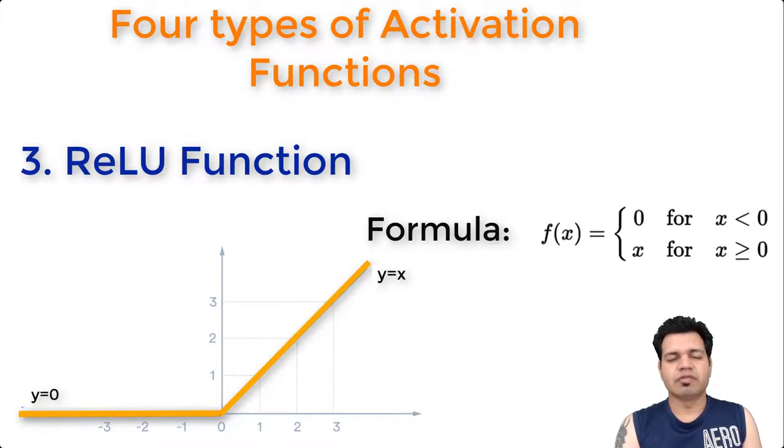A general problem with both the sigmoid and tanh functions is that they saturate, meaning that large values snap to 1, and small values snap to minus one or zero for tanh and sigmoid respectively. Both sigmoid and tanh are really sensitive to changes around their midpoint of their input, such as 0.5 for sigmoid and zero for tanh. To overcome these issues we use ReLU functions. The main advantage of ReLU function over other activation functions is that it does not activate all the neurons at the same time.